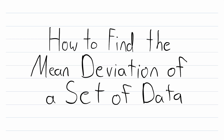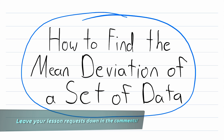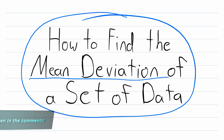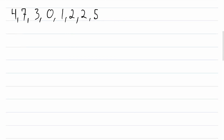Hey everyone, welcome back to Wrath of Math. In today's video, we'll be going over how to find the mean deviation of a set of data. The mean deviation is sometimes called the mean absolute deviation or the average absolute deviation. So if you were coming here hoping to learn about those, that's what we're talking about. This is a viewer requested video — if you have any requests, be sure to leave them down in the comments. With that said, let's get into it.